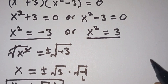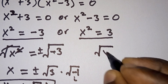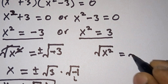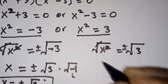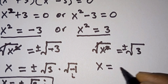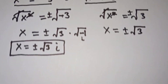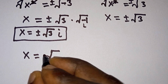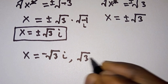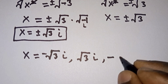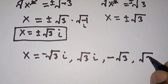Now let's pay attention to the other equation, x squared minus 3 equals 0. Straight away let's take the square root on each side of the equation. As always, plus or minus is important. So we have x is equal to plus or minus square root of 3. This gives us four solutions in total: negative square root of 3 times i, square root of 3 times i, negative square root of 3, and square root of 3.